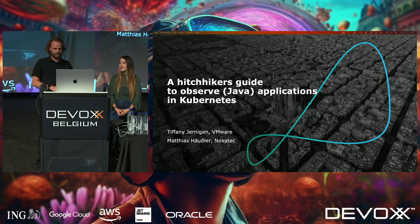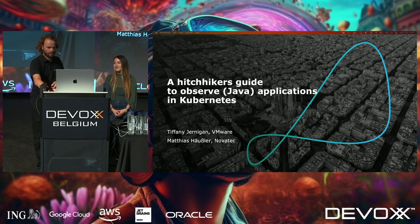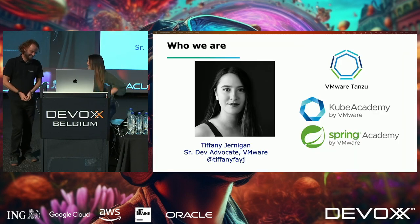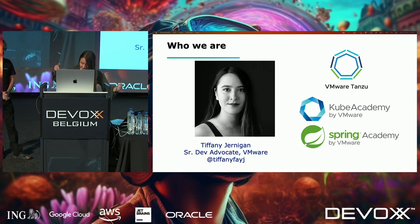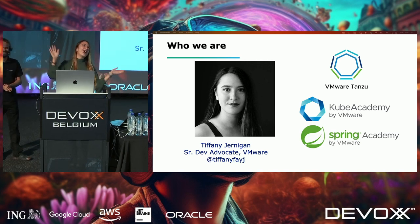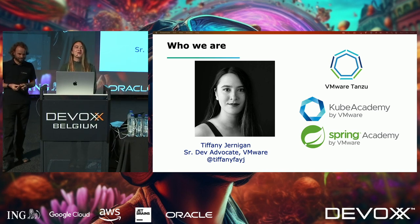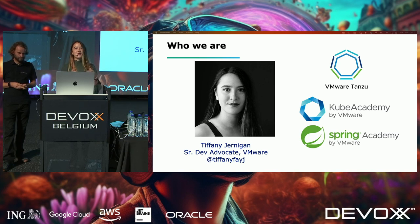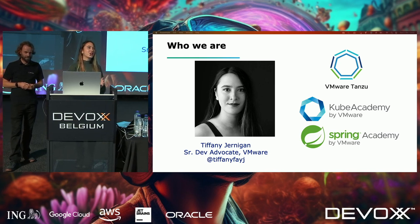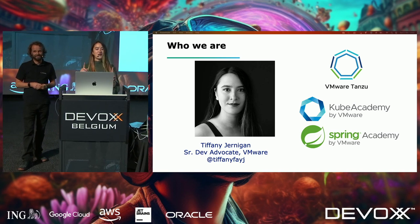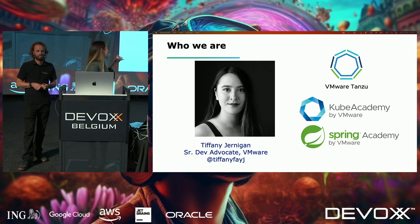Before we go into the details, we'll do a quick introduction. I'm Tiffany Jernigan — I'm 156 centimeters, so I have to stand on this step so the camera can see me. I'm a developer advocate at VMware, focused on Tanzu and open source things with Kubernetes and a bit of Spring. If you want to learn more about Kubernetes or Spring, there are free training courses on the Cube Academy and Spring Academy.